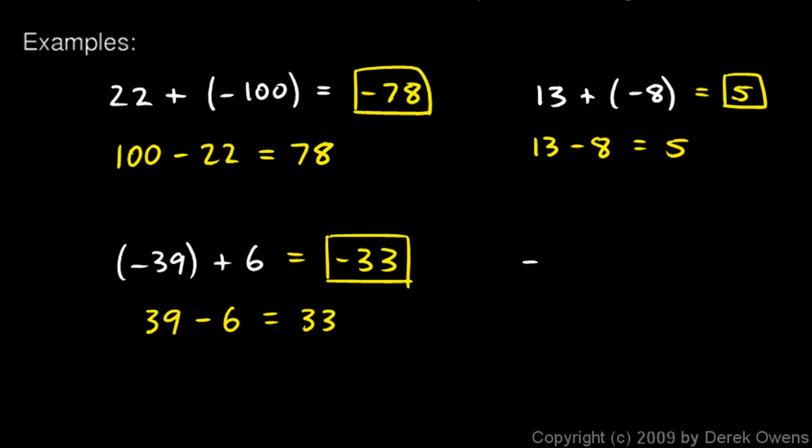And the last example here, negative 10 plus 17. So I think to myself, okay, which is bigger, 17 or 10? Well, 17 is bigger, so I do 17 minus 10, and that's easy, it's 7. And so which is bigger, 17 or 10? Well, 17 is bigger, and that's positive in this case, so my answer is a positive 7.